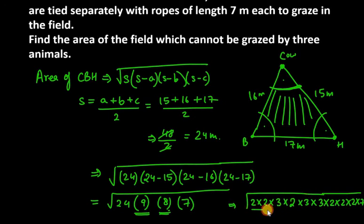So now you can see that we have pairs for 2, pairs for 3, again pairs for 2, again pairs for 2. But the remaining is 3 and 7 which will be under the bracket only. So this is under root 21. 3 into 7 is 21. And when you reduce these all pairs, you will get 24. So area of triangle is 24 under root 21 meter square.